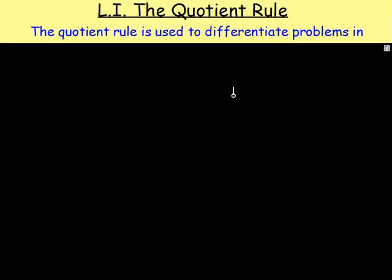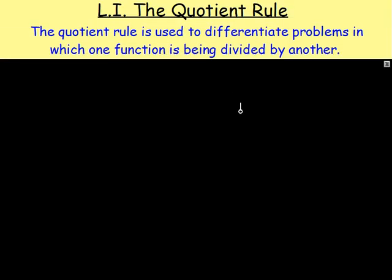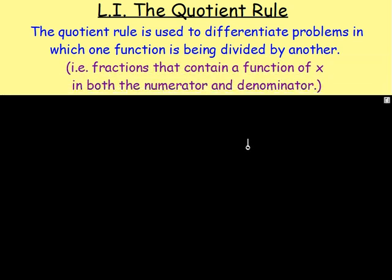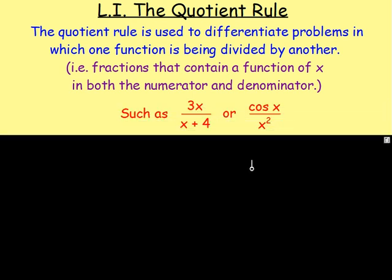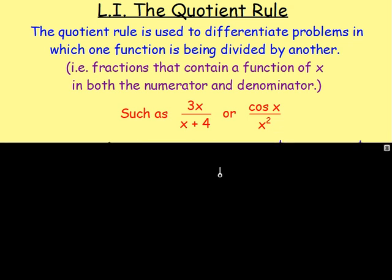So that's what a quotient is, but where does that come into the quotient rule? Well, the quotient rule is used to differentiate problems in which one function is being divided by another — in other words, fractions that contain a function of x in both the numerator and the denominator, such as 3x over x plus 4. We can see that one function, the 3x, is being divided by another function, the x plus 4. Or cos x divided by x squared — another function. So when we have that, we apply what is known as the quotient rule.